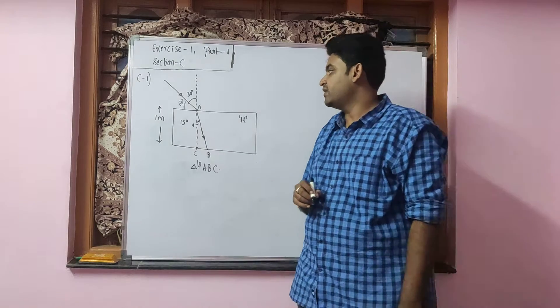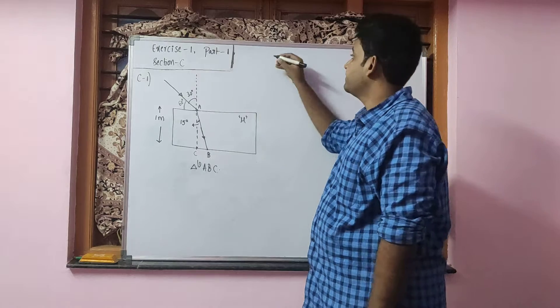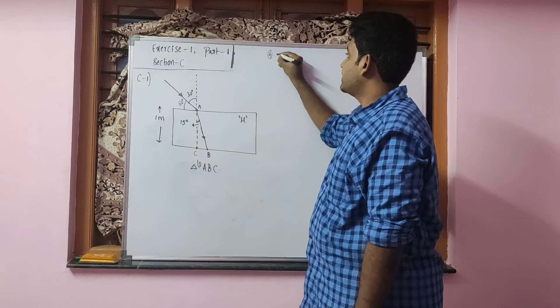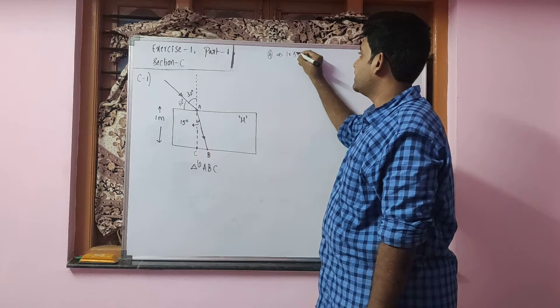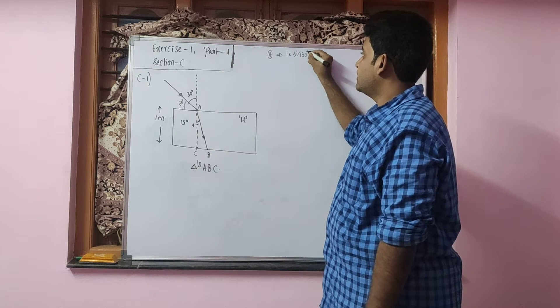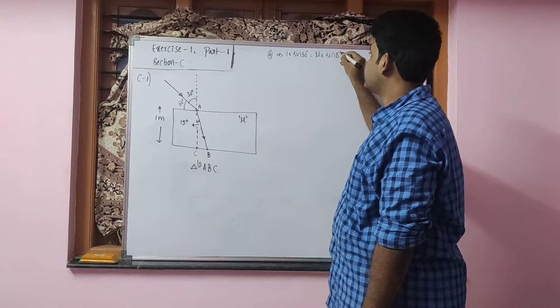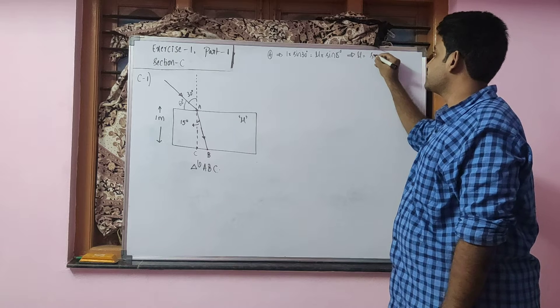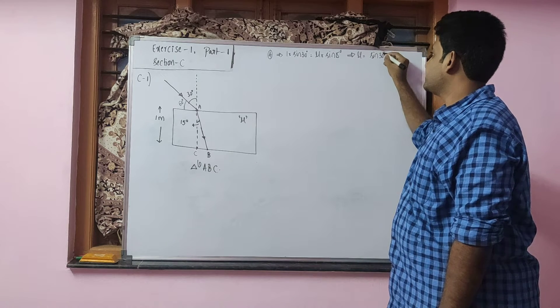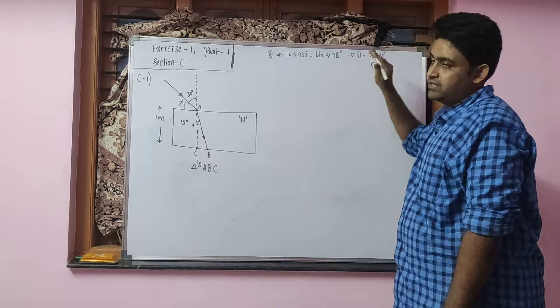First I am going to calculate the refractive index by applying Snell's Law at this point. So at point A if I apply Snell's Law, outside medium 1 into sine of 30 degrees equals inside medium mu into sine of 15 degrees. So from here I am getting the value of mu which will be equals to sine 30 degrees by sine 15 degrees. Let us keep it aside.